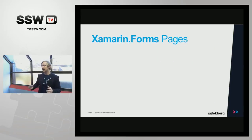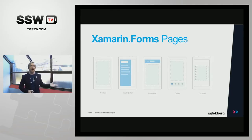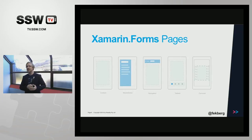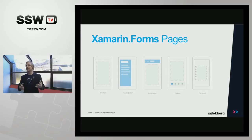With Xamarin.Forms, we get a couple of new concepts. We have different pages inside applications which make up detailed pages, navigations, tabs, and carousels. These concepts work differently on different platforms — for instance, have you ever seen a tabbed view on Windows Phone? Mostly you have a panorama view where you scroll from the sides. With Xamarin.Forms, you'd expect to get something similar to that on Windows Phone, buttons on the bottom on iOS, and it probably works differently on Android.